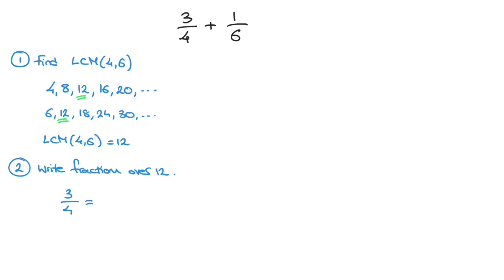For 3 over 4, to write that as a fraction over 12, we can look back at the list of multiples of 4 and notice that 12 is the 3rd multiple of 4. So we can multiply 4 by 3 to get 12. But if we're multiplying the denominator by 3, we have to do the same thing on the numerator. So that would be 3 times 3 on the numerator. And now we can state that 3 over 4 equals 9 over 12.